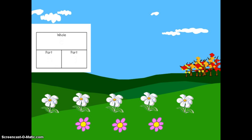I have one whole garden. My garden is made up of two parts — white flowers and pink flowers. To figure out how many flowers are in my whole garden, I'm going to start with counting my parts. First, I'm going to count how many flowers are in the white part of my garden. Let's count.